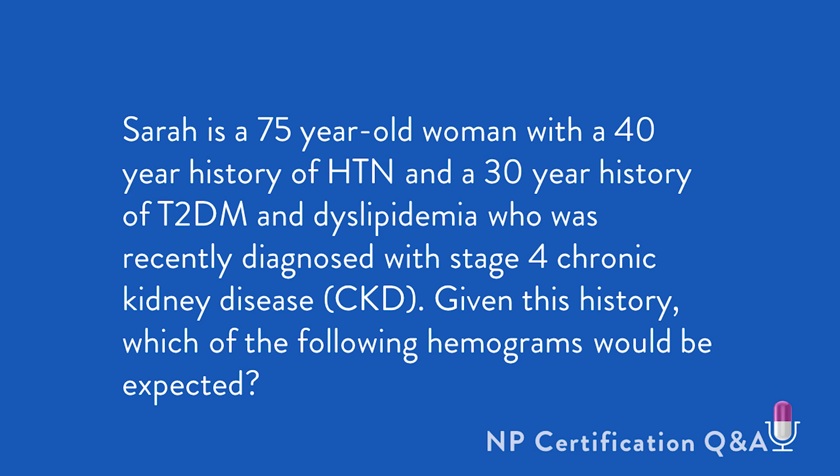Before we start, as I go through the options here, I just want to remind you, for these case scenarios, hemoglobin norm is 12 to 14 grams, MCV is 80 to 96, and RDW for the norms are 11.5 to 15%. Keep that in mind as we're going through the case scenarios here.